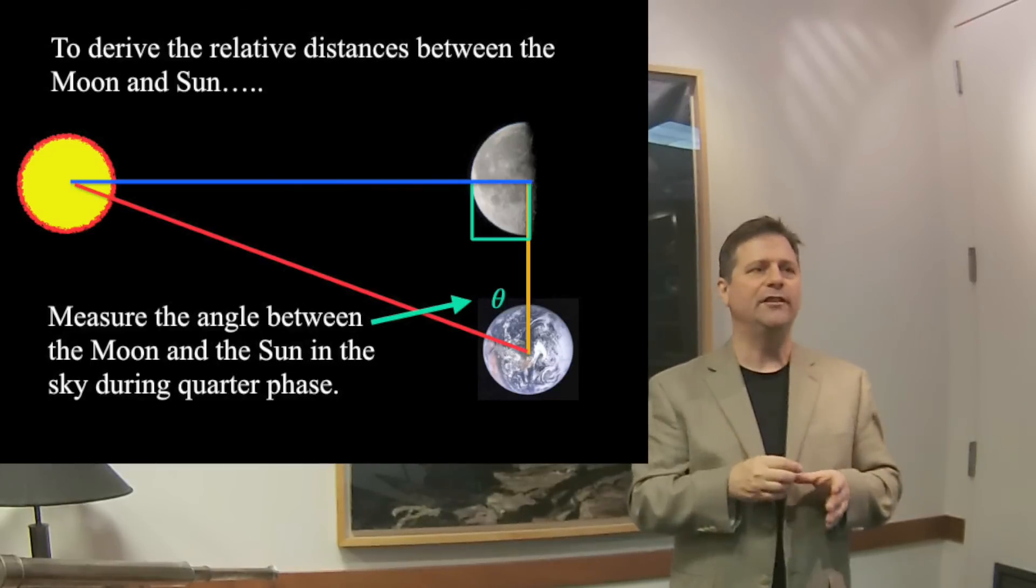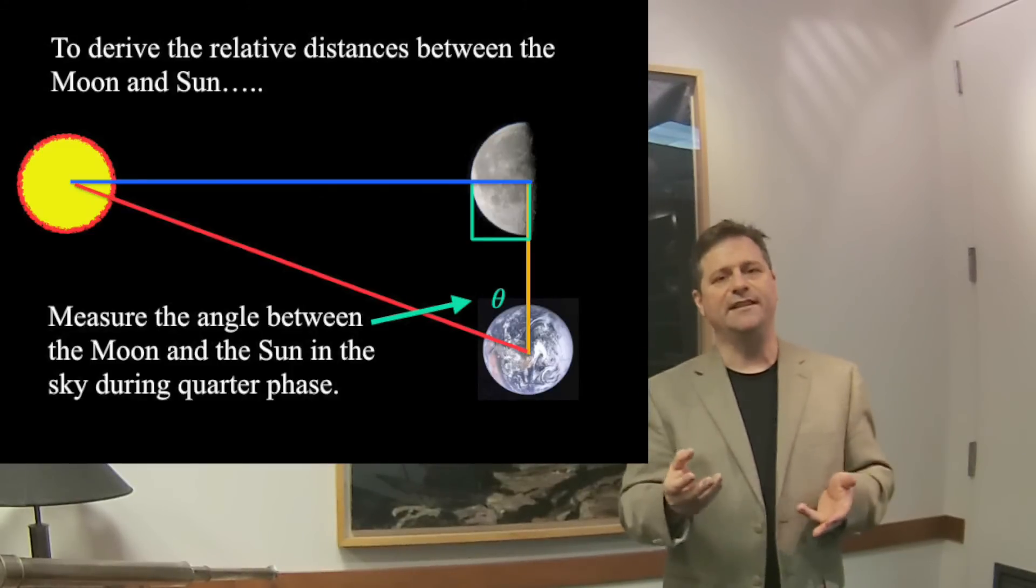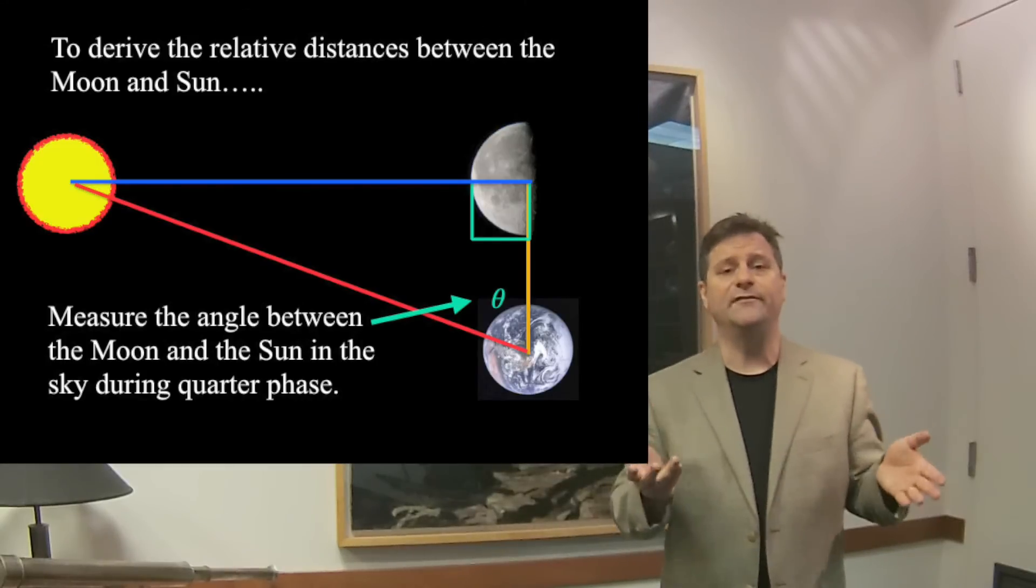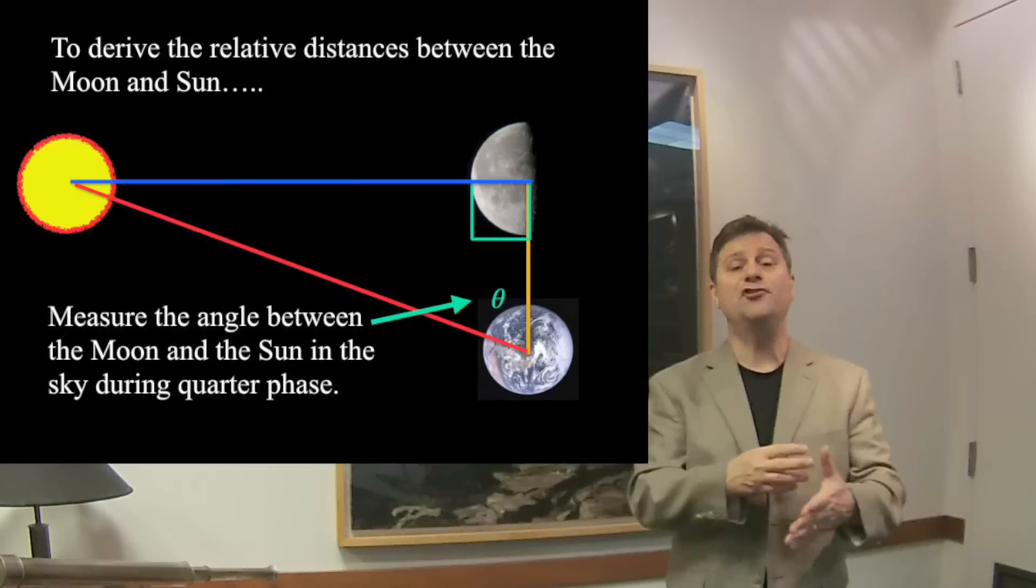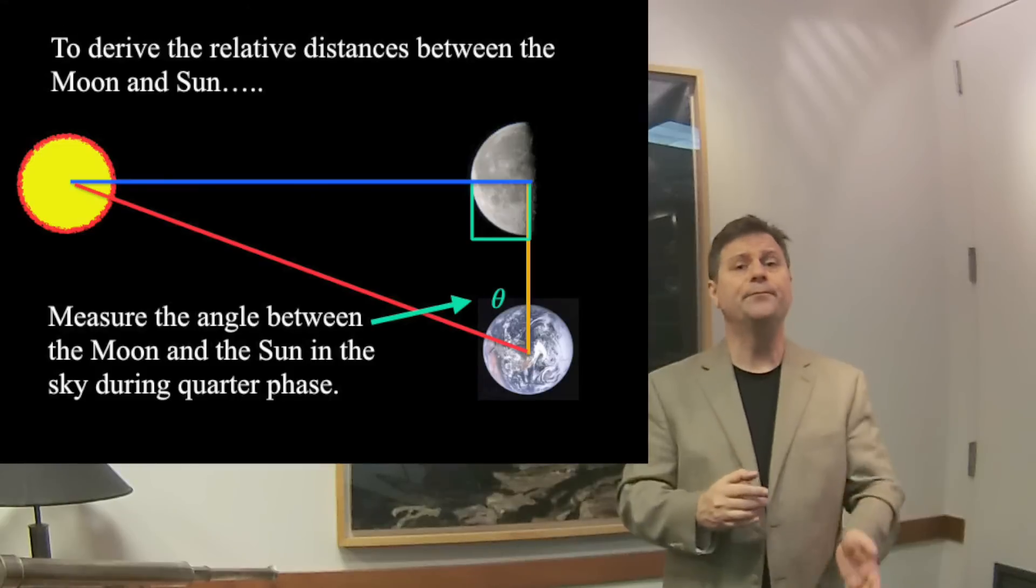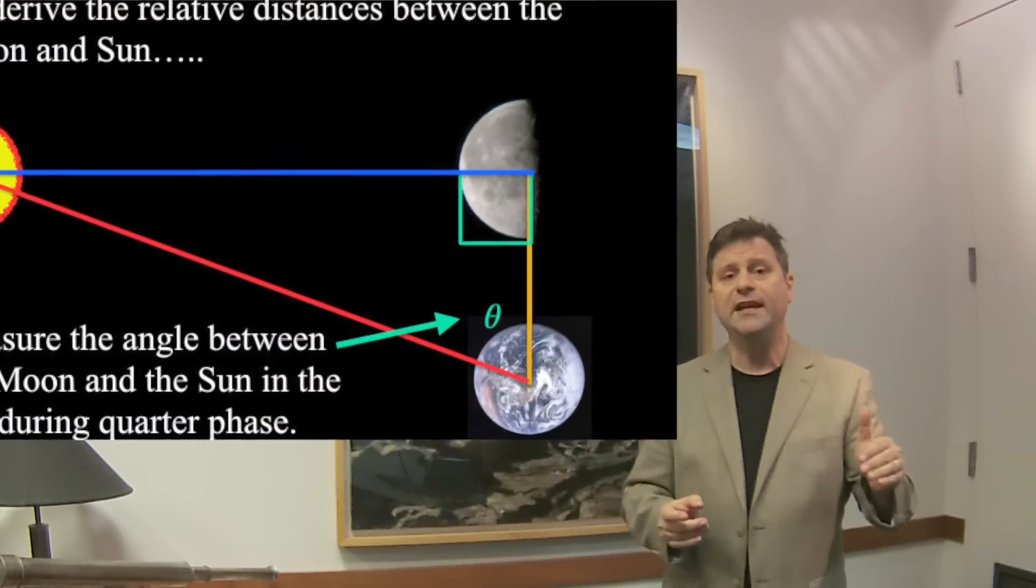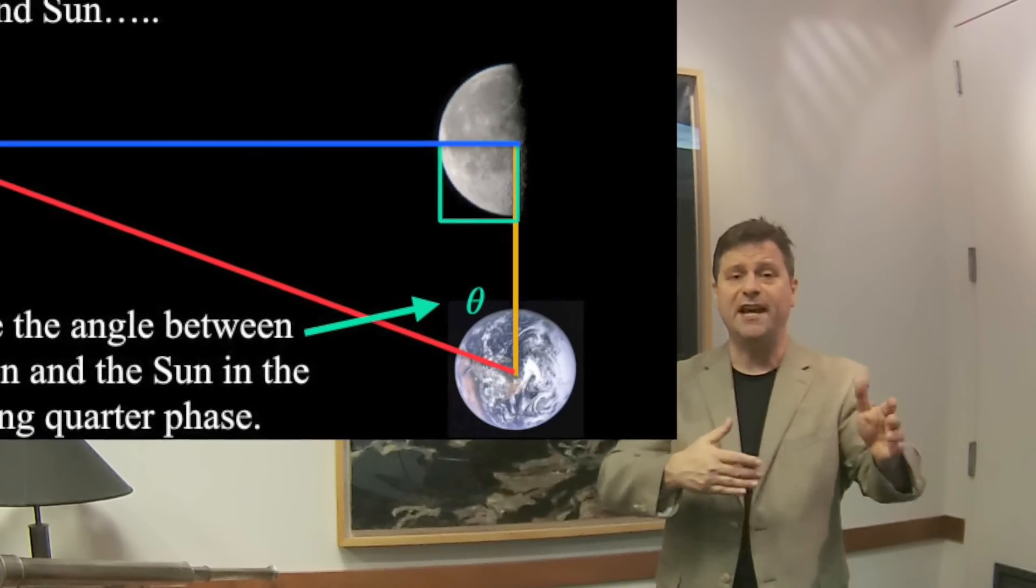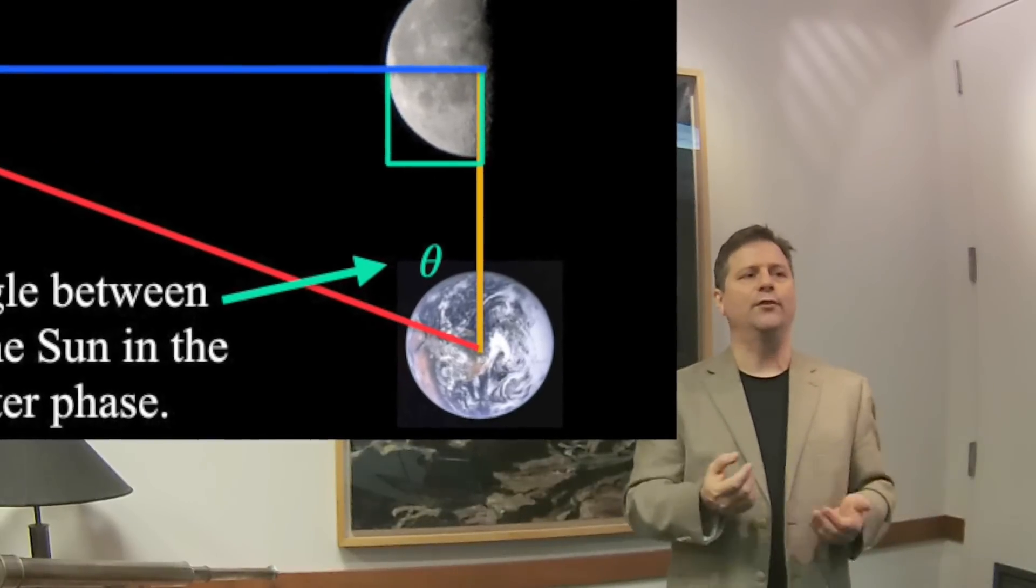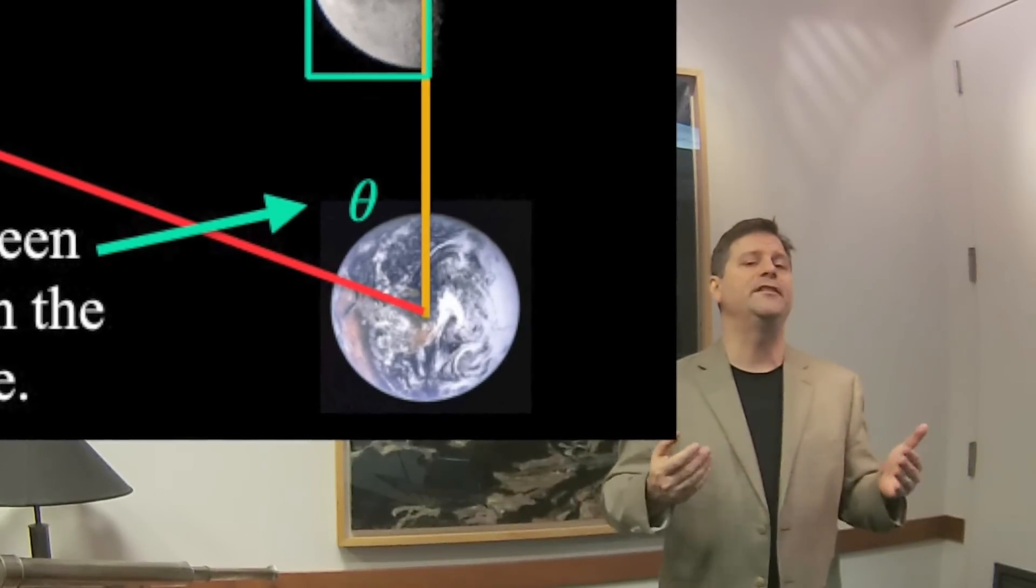When Aristarchus looked and went, hey, that's a 90 degree angle, which means that I can get their relative distances pretty easily because using simple geometry, we can get their relative distances because of the size of a triangle. And all we have to do is measure angles. So what he did is he endeavored to measure the angle in the sky between the moon and the sun. Remember the 90 degree angle of the triangle is where the moon is. But when we look at the moon and the sun, that angle is less than 90 degrees. So we can use trigonometry or specifically the cosine of the angle to get the relative distances between the earth and the sun.